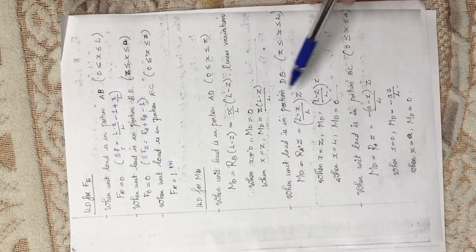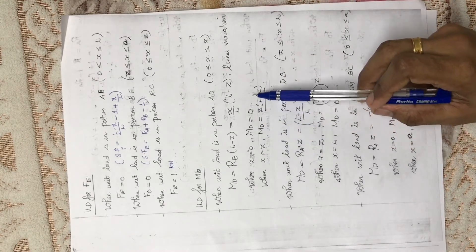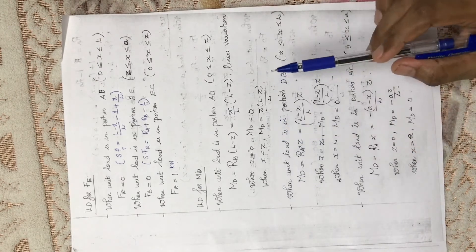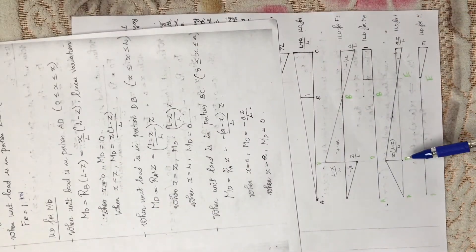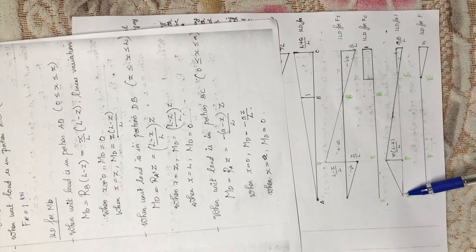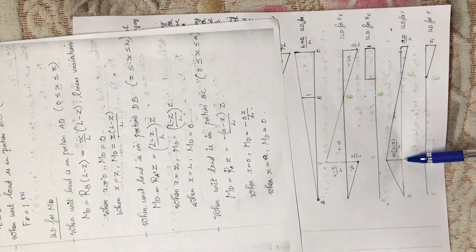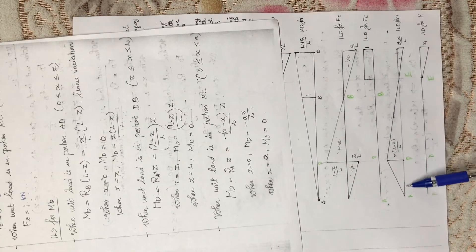Applying the limits: when s equals zero, Md equals zero; when s equals z, Md equals z·(l minus z)/l — both positive values. So we can draw the influence line diagram for Md: at s equals zero, Md is zero, and at s equals z, Md is z·(l minus z)/l. This completes the influence line diagram for the first part.